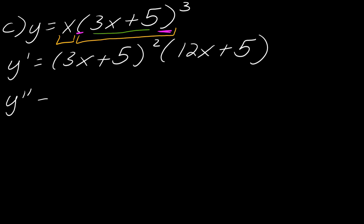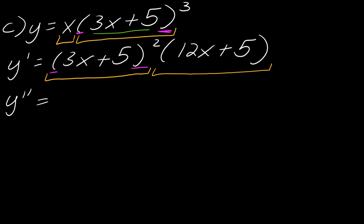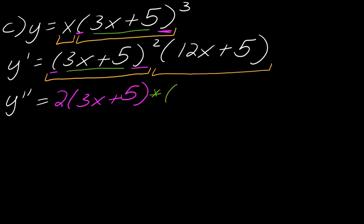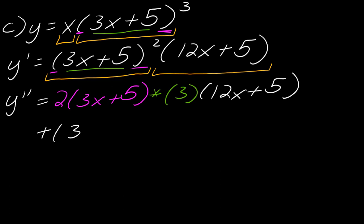Now let's take the second derivative. I'm going to use the product rule again. Here's one function and here's another. When I take the derivative of (3x + 5) squared, the outermost function is the square and the innermost is (3x + 5). I bring the 2 down, subtract one from the exponent, then multiply by the derivative of the inside which is 3. Then I leave (3x + 5) squared alone and take the derivative of (12x + 5), which is just 12.